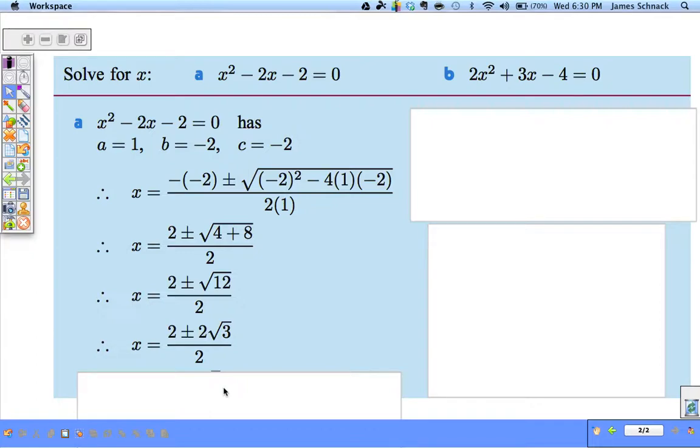And what I'm noticing here is, I can do 2 divided by 2. I can take the 2 root 3 and divide it by 2. I can divide both these terms by 2. Here's my final answer: 1 plus or minus the square root of 3.